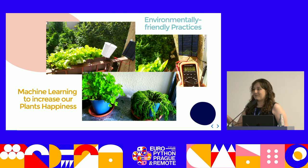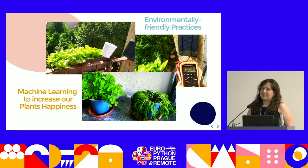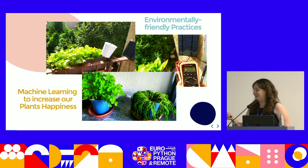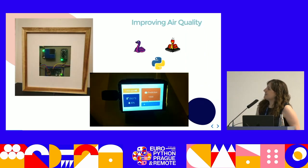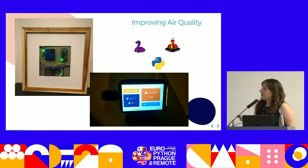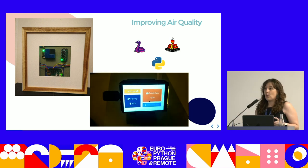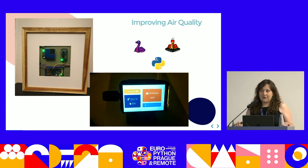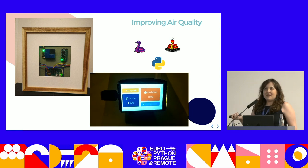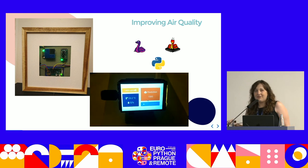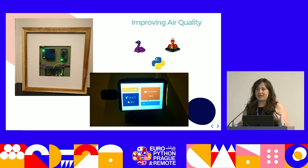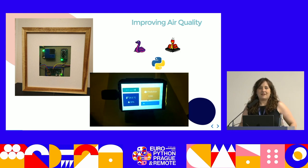I was also implementing some machine learning pipelines to increase happiness for my plants. As you can see, my plants needed it — a clear example that sometimes we don't need machine learning to understand that our plants are not happy. In my last home project, I built an air quality monitoring and predictive system. I couldn't know when to activate my ventilation system — basically, when to open the window. That was the moment when I started with TinyML.